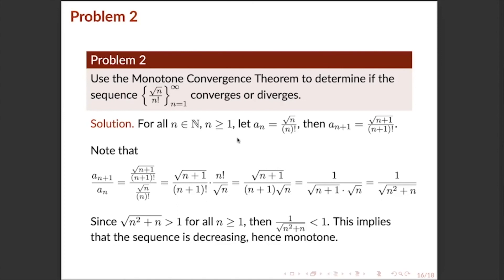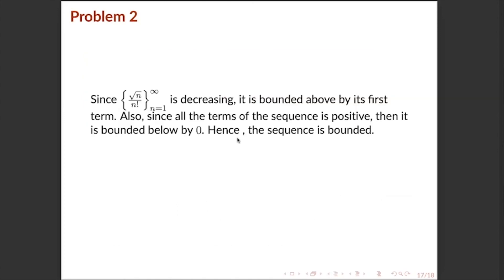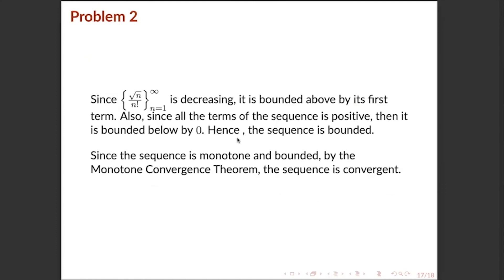Since the sequence is decreasing, it is bounded above by its first term. Also, since all terms of the sequence are positive, it is bounded below by 0. Hence the sequence is bounded. So the sequence is both monotone and bounded. By the Monotone Convergence Theorem, the sequence is convergent.